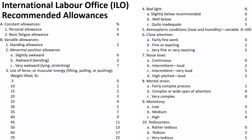For example, for constant allowances, nine percent is added to the calculated normal time of the job to get the standard time. For variable allowances, it depends on the type of task and the environment or condition under which the task is performed.